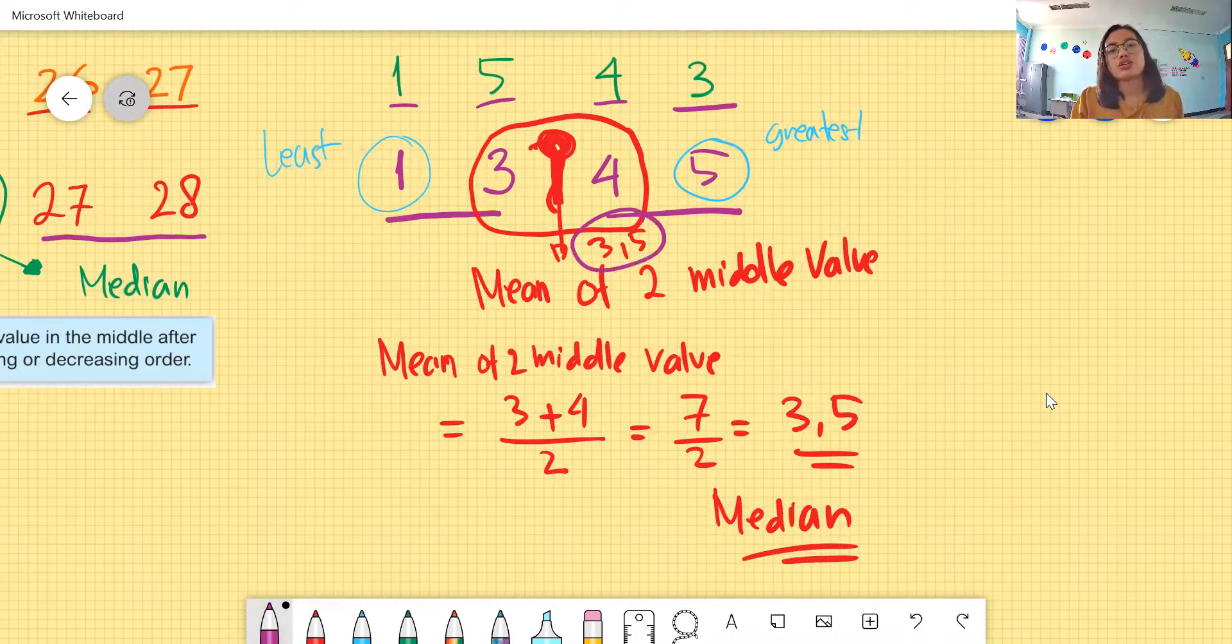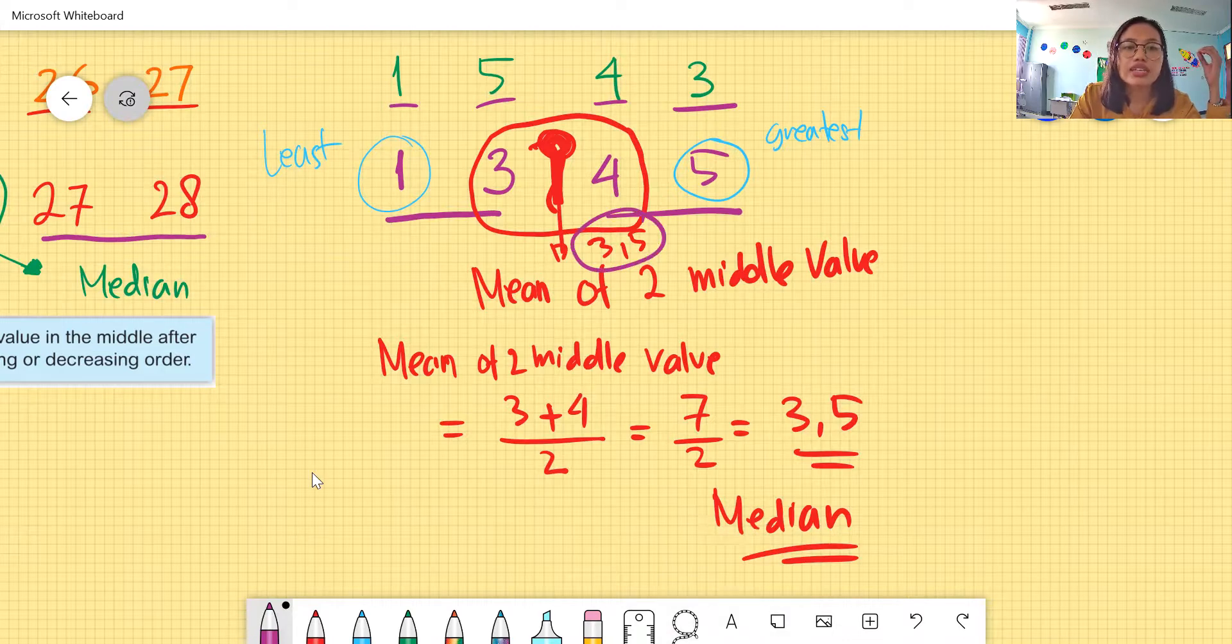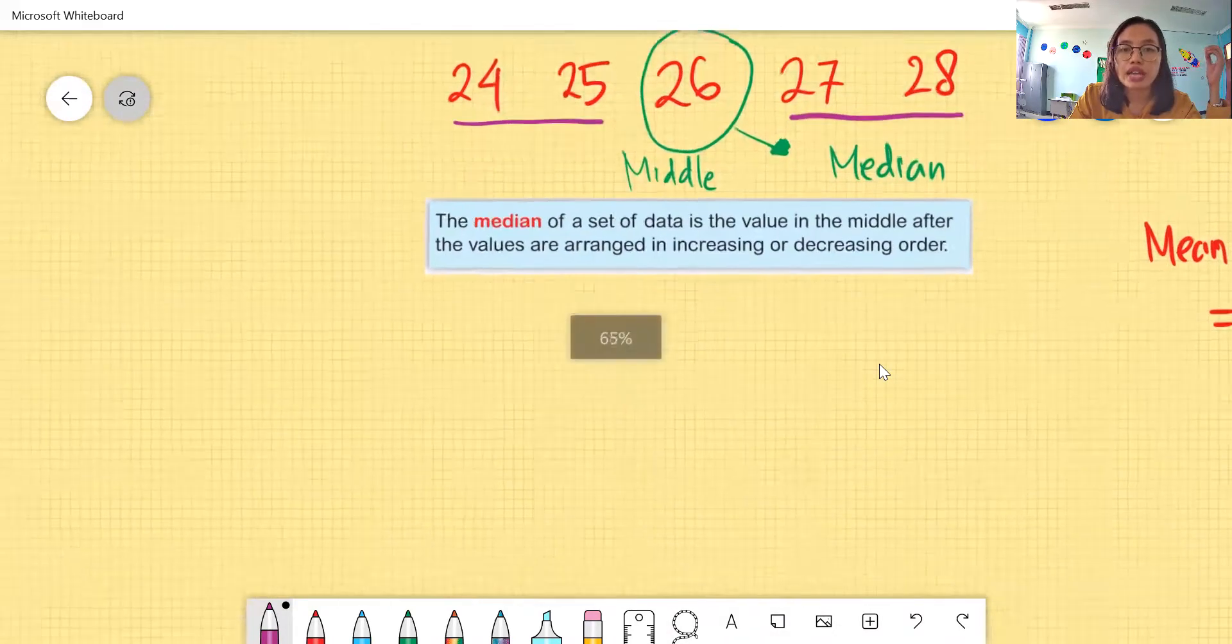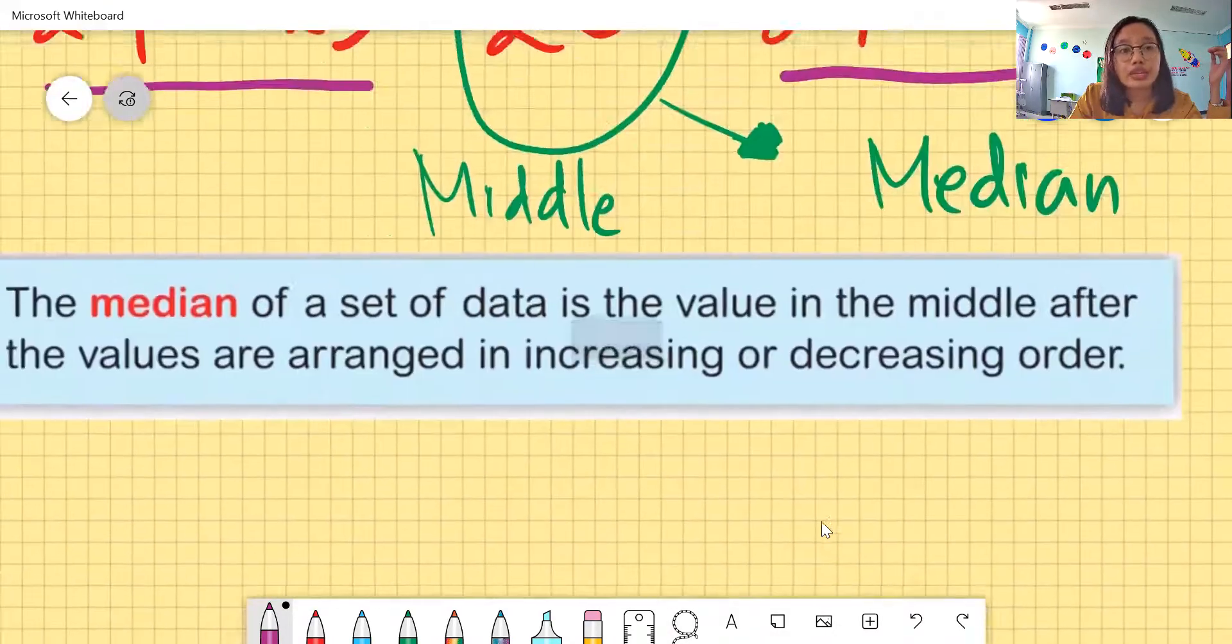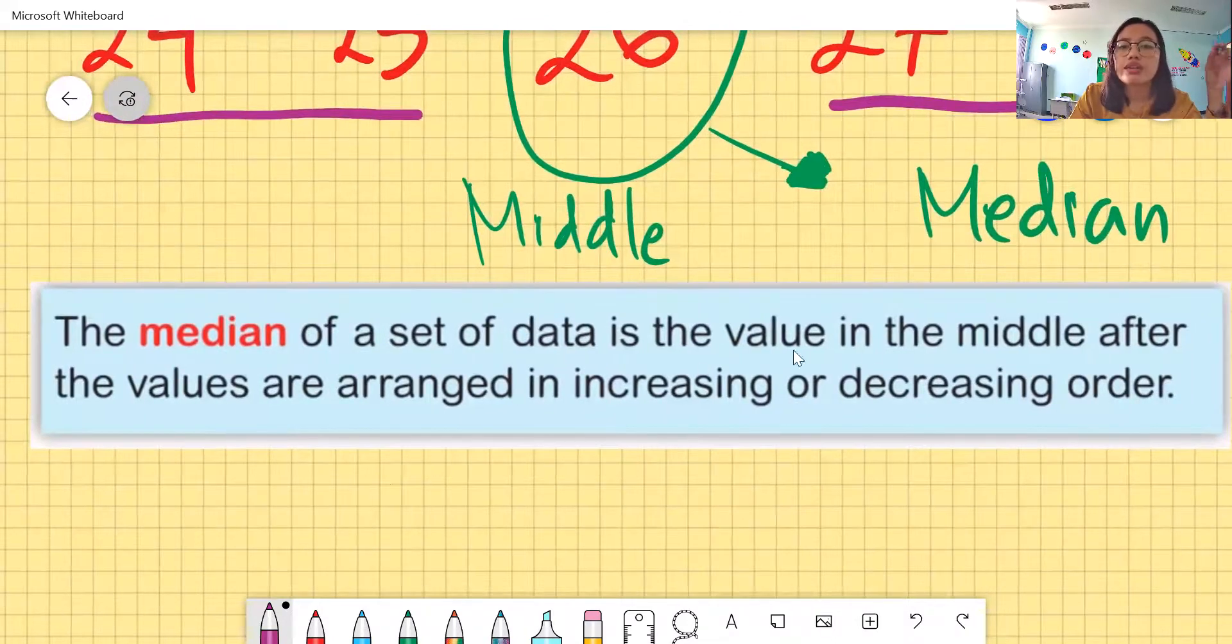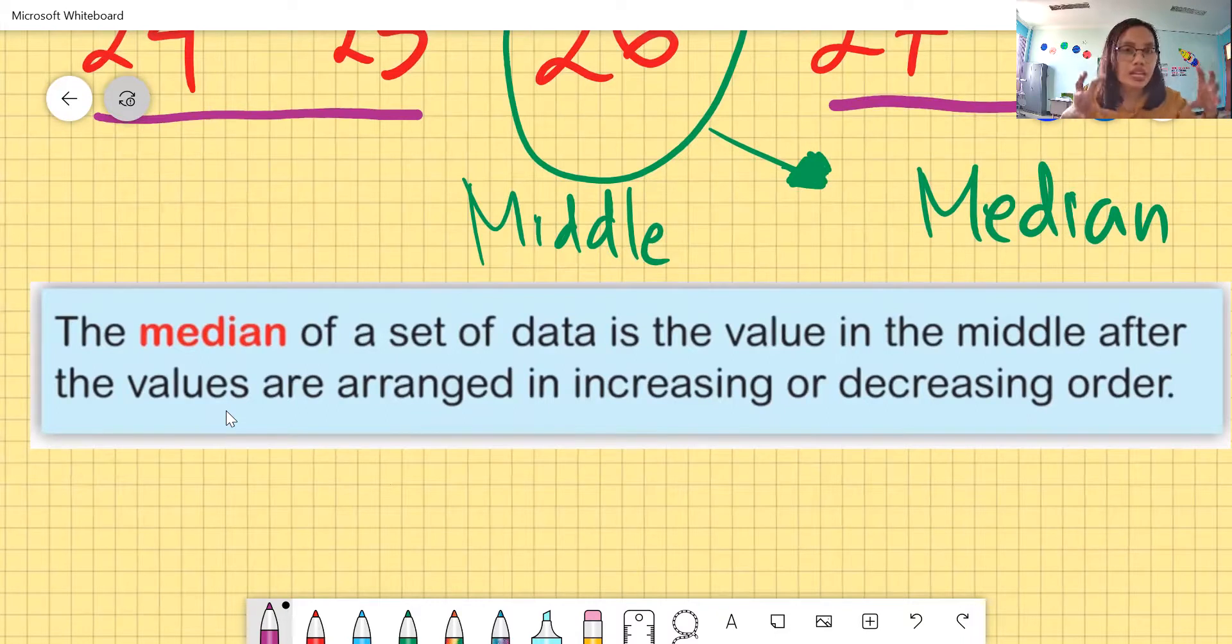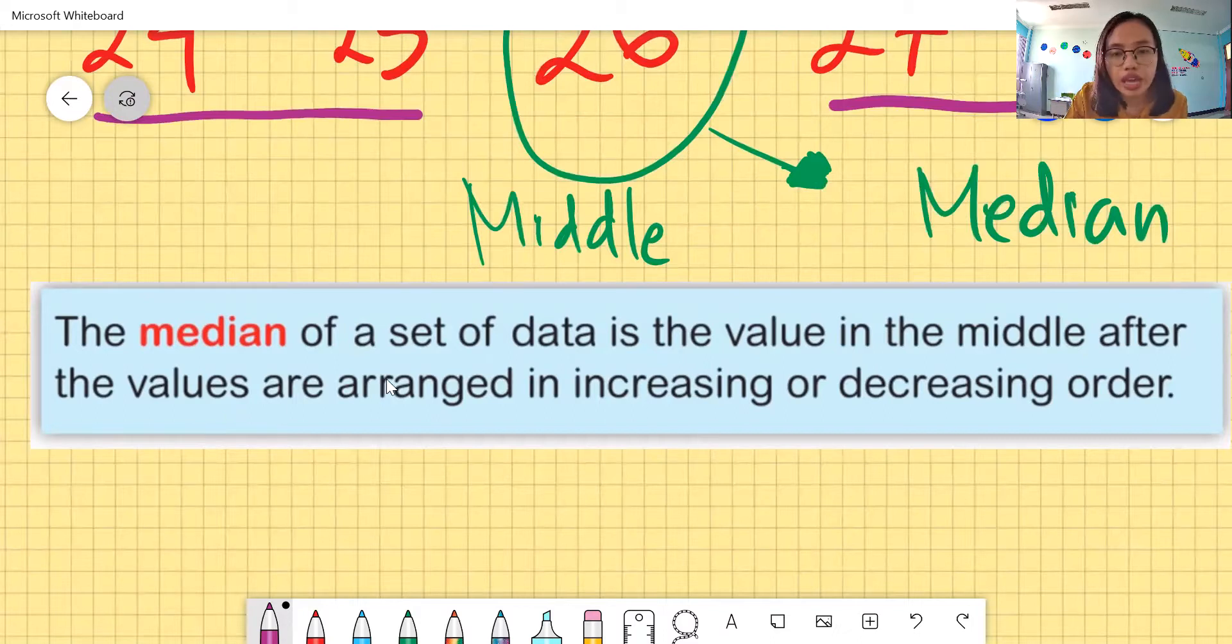So, we can conclude that, kita dapat simpulkan ya. Bahwa median is the value in the middle after the values are arranged in increasing or decreasing order. Jadi, intinya ingat kalau mau mencari median, harus diurutkan dulu dari yang terkecil ke terbesar ataupun sebaliknya.